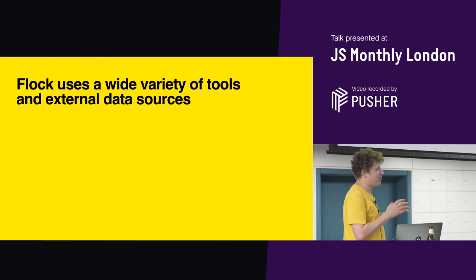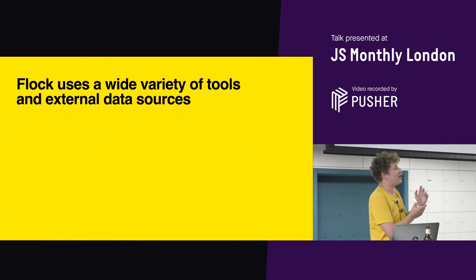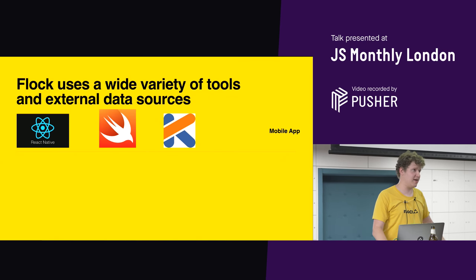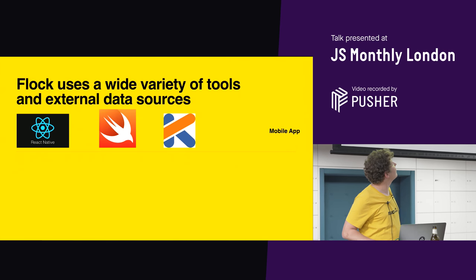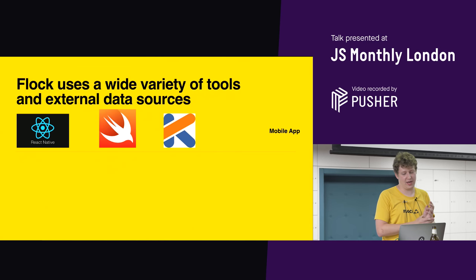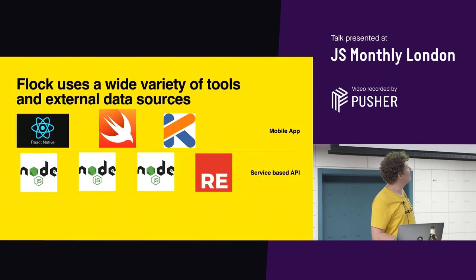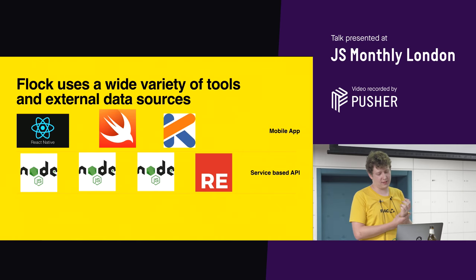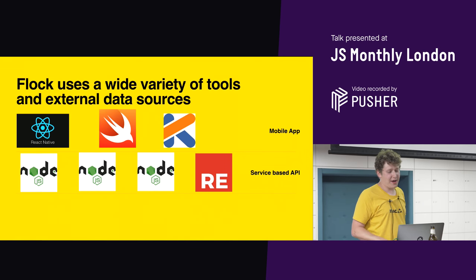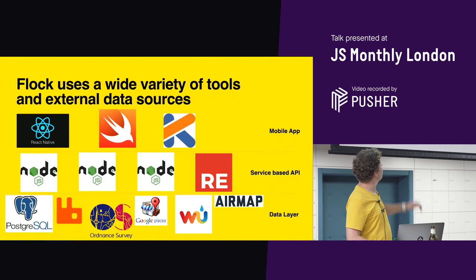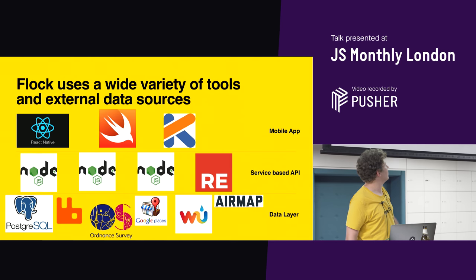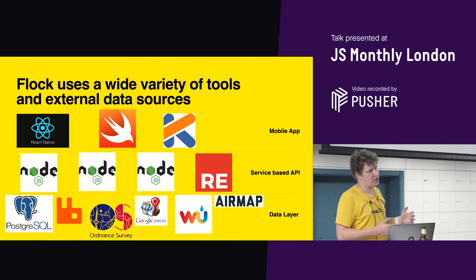Now we've got that out of the way, let's talk about how we built the system. We use a variety of tools. Our front end is a React Native application. We do bits of Swift and Kotlin because sometimes React Native kind of sucks. On the back end, we run a microservice architecture, primarily Node.js servers, and we are running a ReasonML service in production. Our primary source of truth is PostgreSQL, and we use RabbitMQ for messaging.